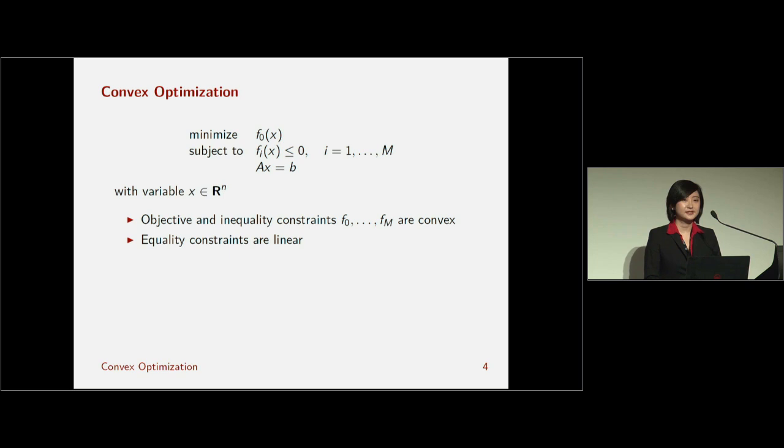You have some linear equality constraints, which we'll put into matrix form as AX equals B for some matrices A and B. The key point here is that all of my functions F0 through F sub M are convex in my variable of interest X.